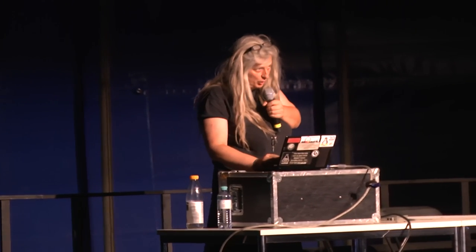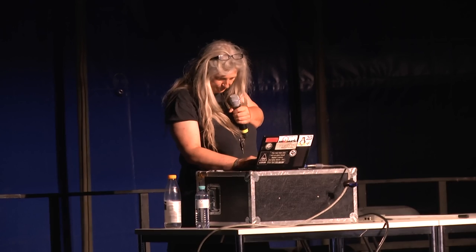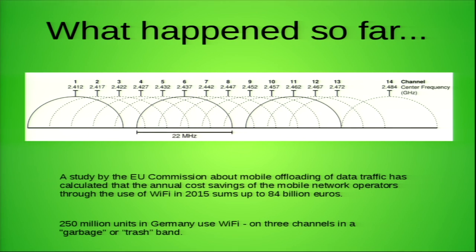In front you can see one of the prototypes that I've built. But let's go into politics first. What you can see here on the slides shows the 2.4 gigahertz band — it's a trash band, or a garbage band as they call it. We have three free non-overlapping channels if we use Wi-Fi according to the 802.11b standard, which is now a legacy.